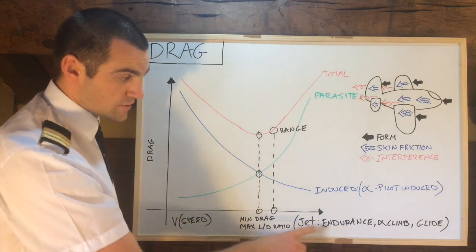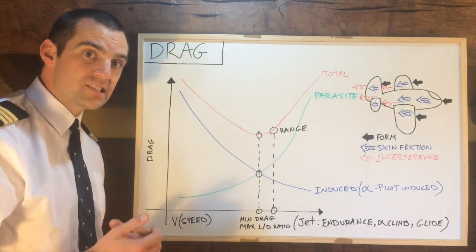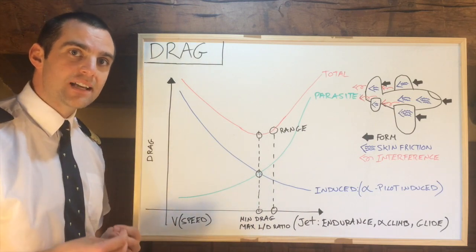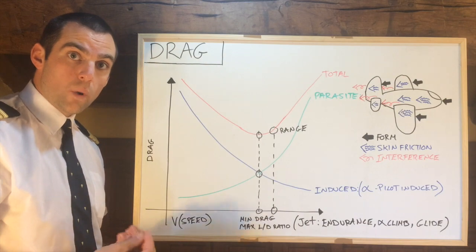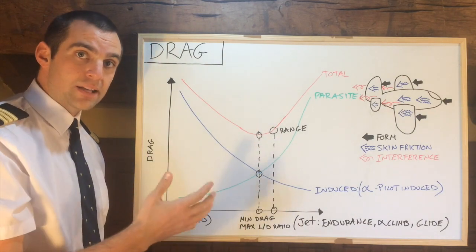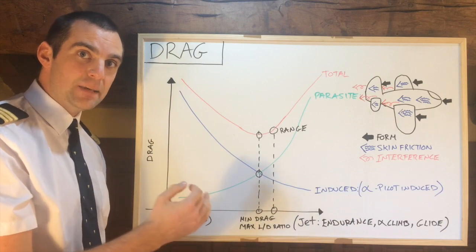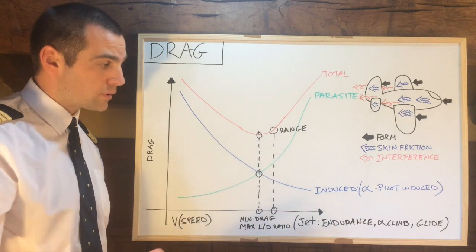Now talking about best endurance speed, associate endurance with time. So best endurance speed will be how can we stay the longest in the air? Well that of course is going to be when we use less fuel, which is going to be at our minimum drag speed. Best range on the other hand is the speed at which we want to get maximum distance out of that aircraft with the same amount of fuel on board.